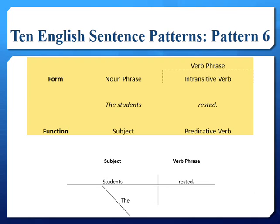Sentences of pattern six have an intransitive verb. An intransitive verb is an action verb that has no direct object. Think of an action verb like a train — an intransitive verb does as it implies: it goes nowhere, which means that the sentence stops at the verb and does not move toward an object. However, this is not to say that we cannot have other phrases and clauses joined, but for this one sentence that contains a subject and a verb, it will not end with an object.